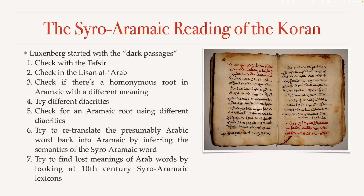In step five, he again assumes the word is Aramaic, but now also plays around with the diacritics — the same thing he did in step three but now on the Aramaic side. He says this step has led to countless successful results, provided that the Aramaic expression gives the larger context a logical meaning. If he still didn't find anything, he would go on to step six.